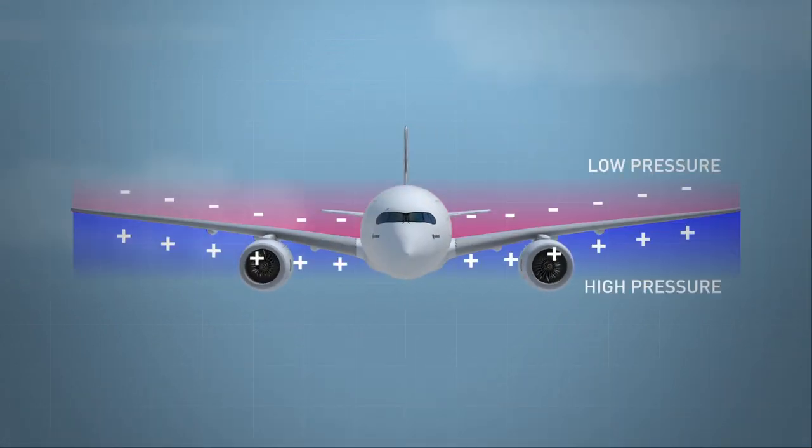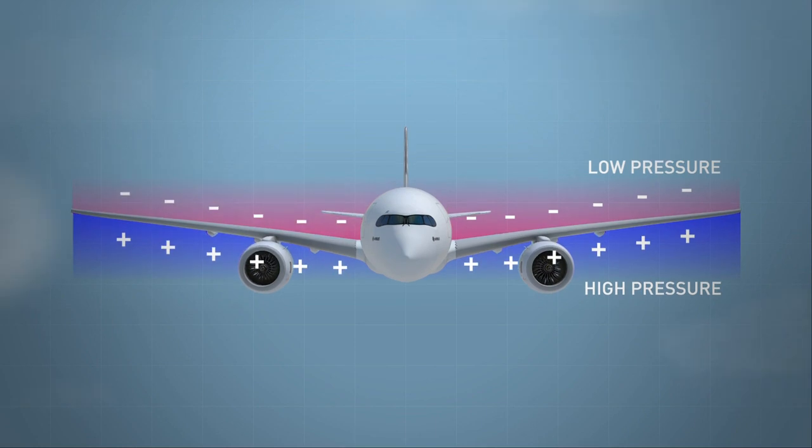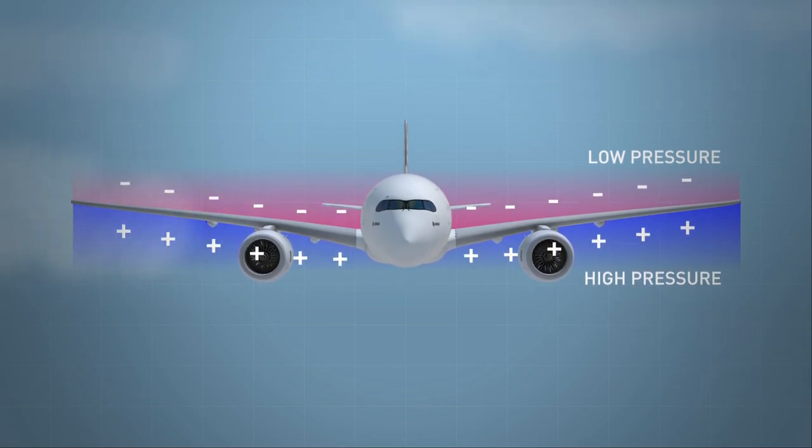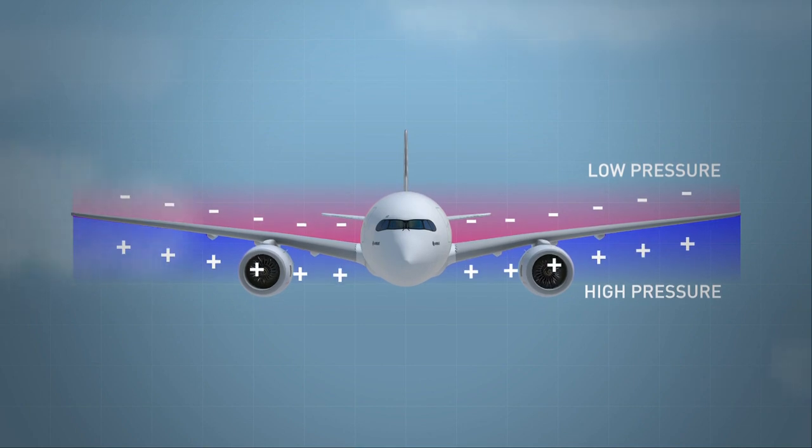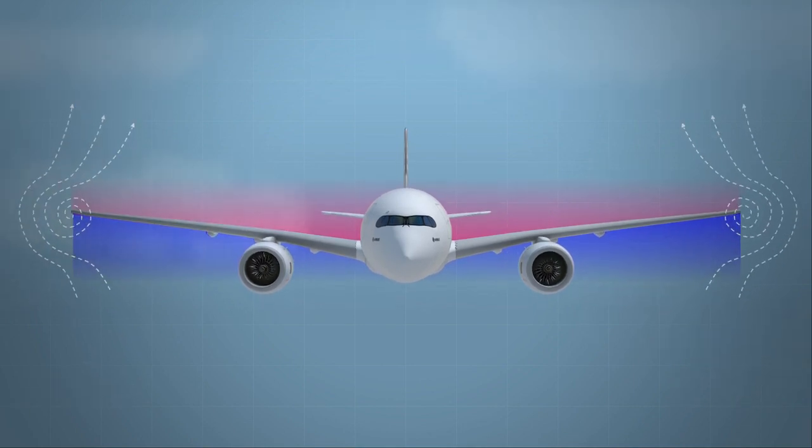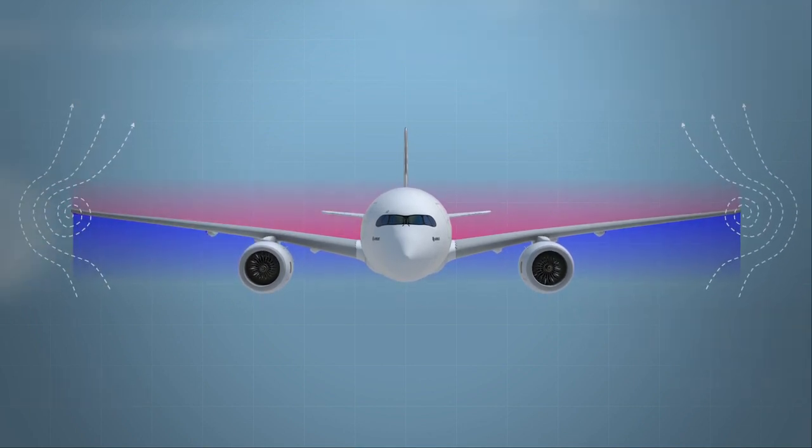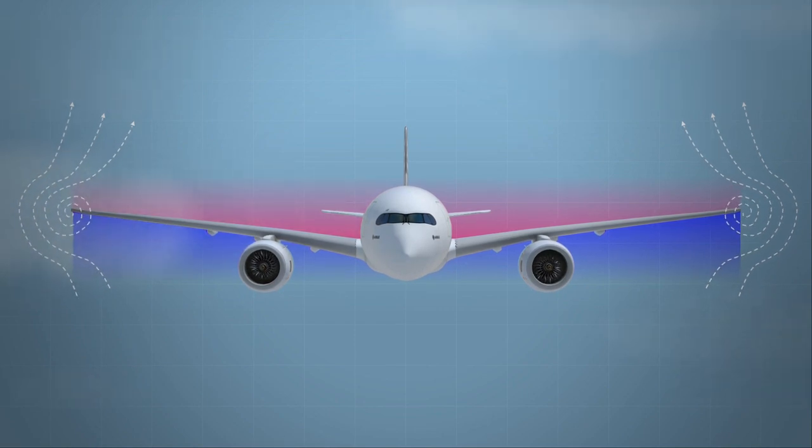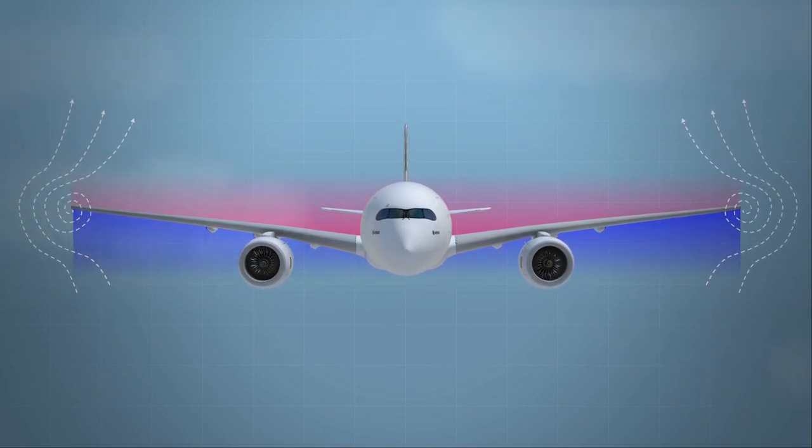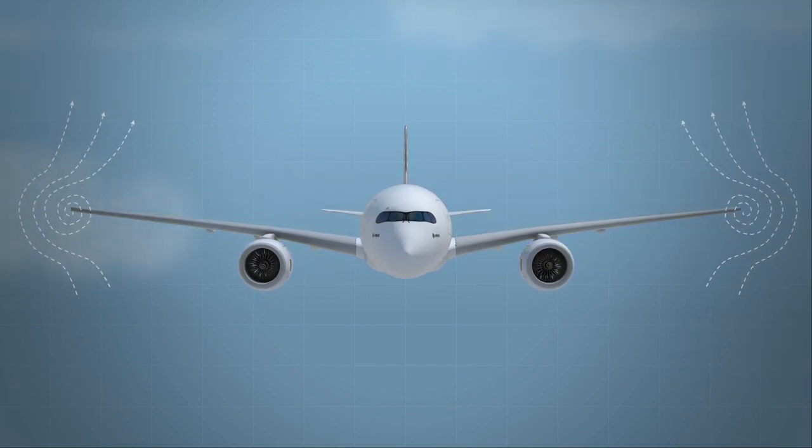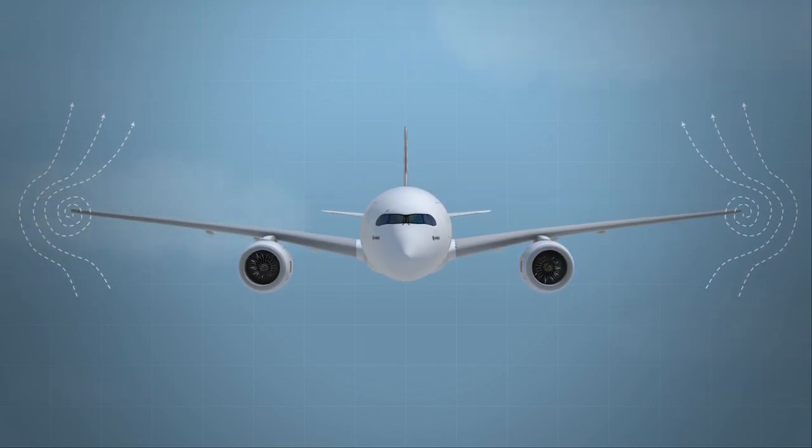As you know, the pressure above the wing is much lower than the pressure below the wing. This is what produces lift and keeps our A350 in the air. Air flows from below the wing and out around the tip to the upper surface in a circular motion. This air movement is known as wing tip vortices. These vortices impact the efficiency of the wing by reducing lift and increasing drag.